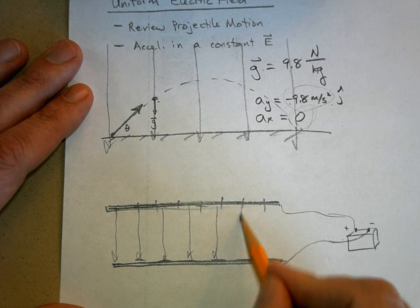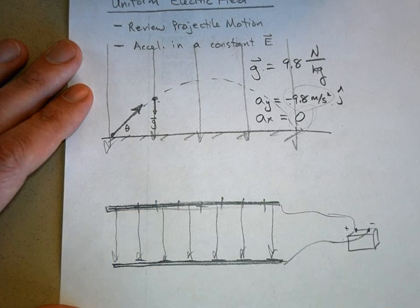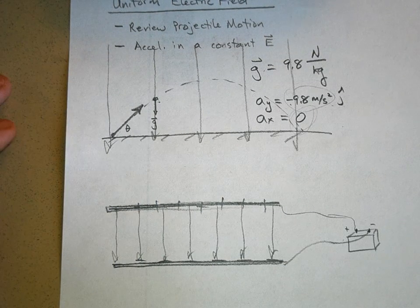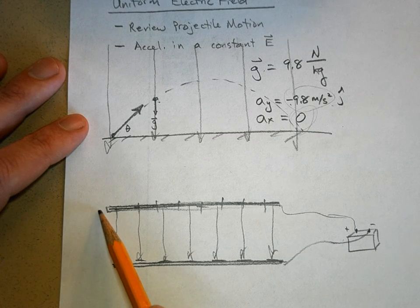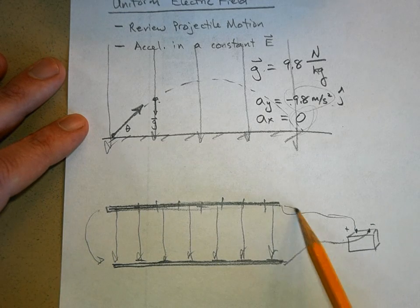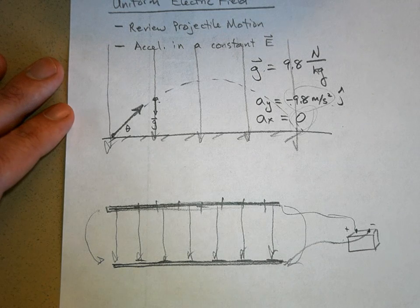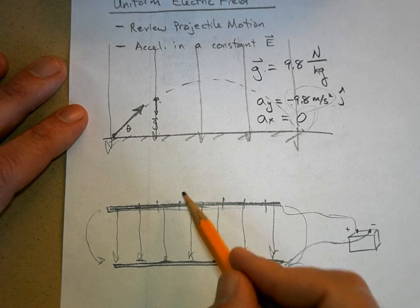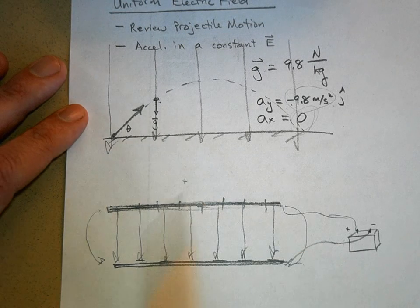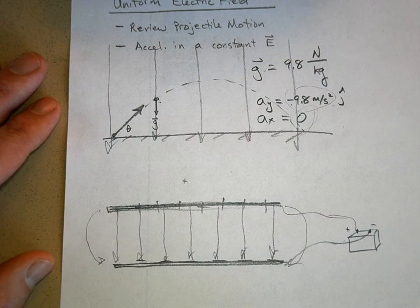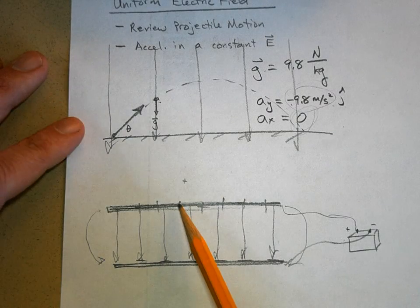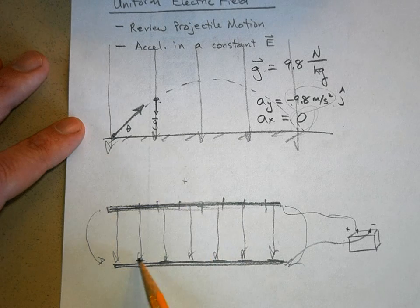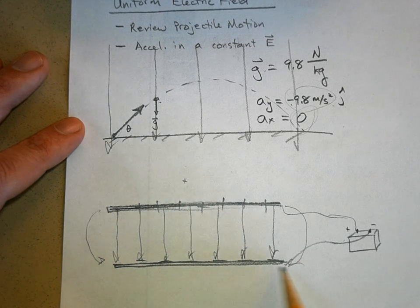The electric field between the plates will be uniform - though not totally uniform since there are end effects with a bulging field line at the edges. What's interesting is that if you put a test charge right outside the plates, it wouldn't feel anything - no electric field at all. It looks like it should be repelled, but the charges are too busy being attracted to each other.